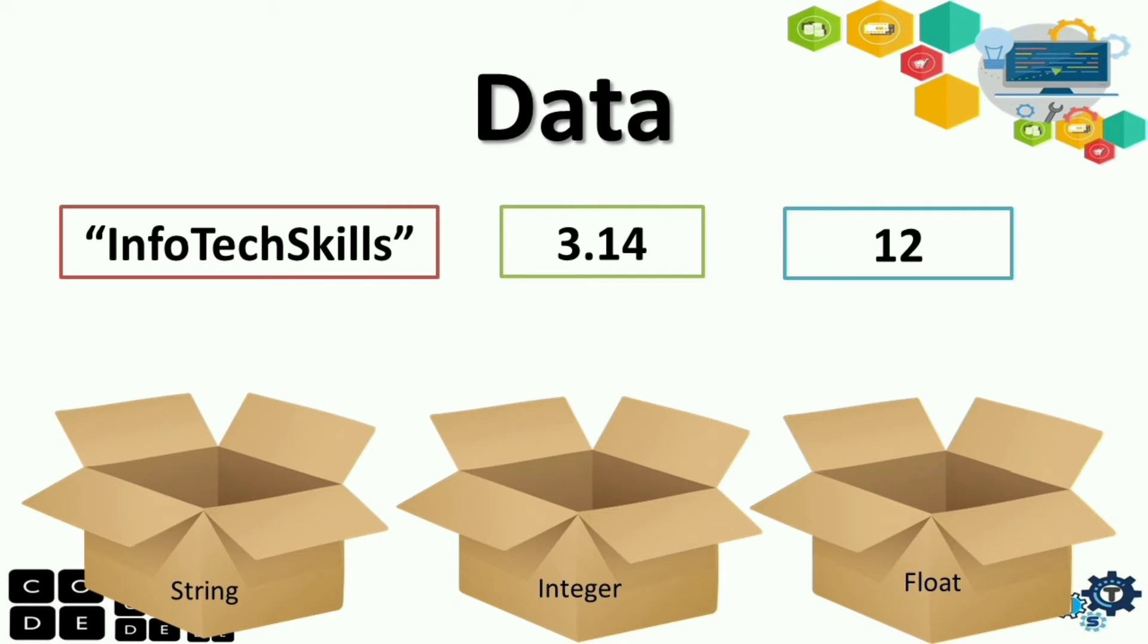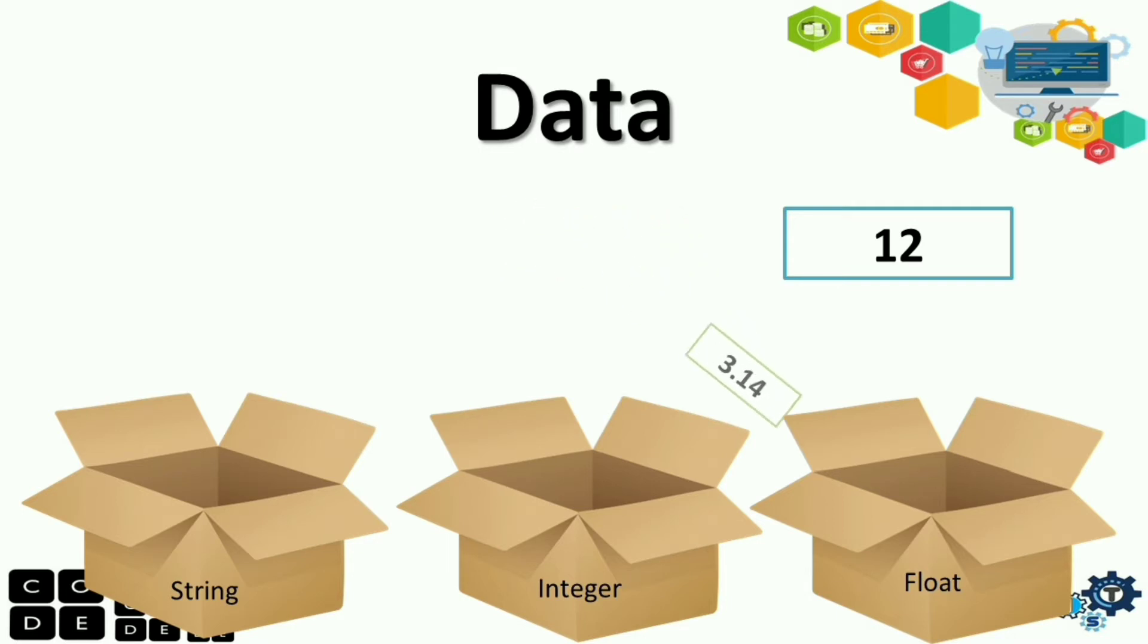So, yung first data natin, we have the Infotech skill. So, makikita nyo naman, naka-double quote siya. So, ibig sabihin, store natin siya kay string. Then next, we have 3.14 that is float. So, yung 12, dun naman natin store sa integer.